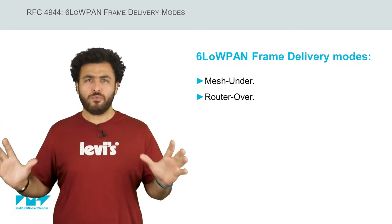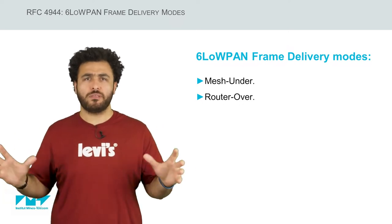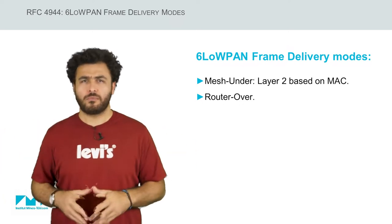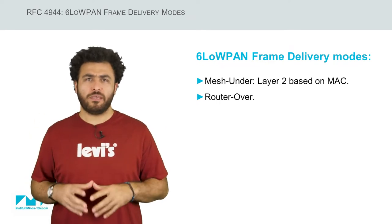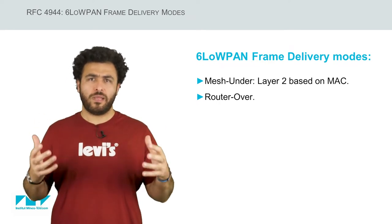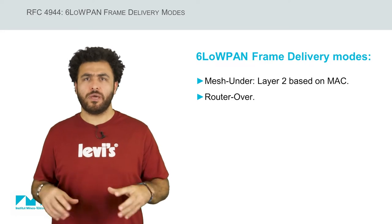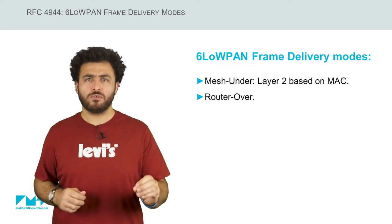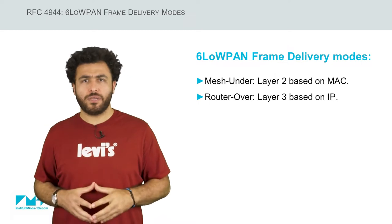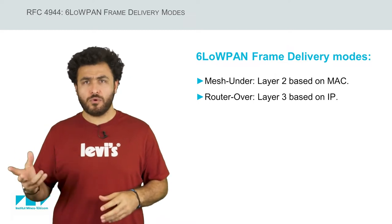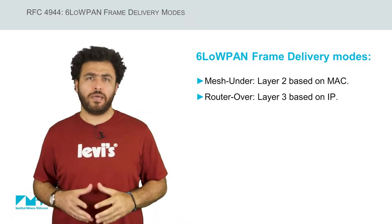Both approaches are widely employed in smart grid networks around the world. The first mode takes place at the 6LoWPAN adaptation layer where the nodes require knowledge of routes at layer 2 based on MAC, whereas the second mode does it at layer 3 based on IP.